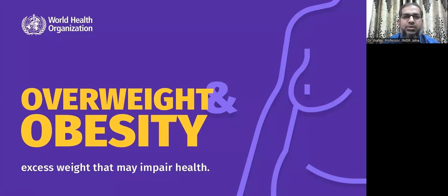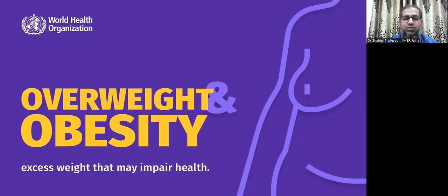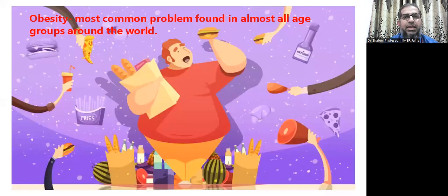There are two terminologies which are commonly used: one is overweight and the second one is obesity. Both involve excess weight, which may impair our health, so we need to take care of the excess weight of our body. Obesity is the most common problem found in almost all countries in the world — it is a universal problem.